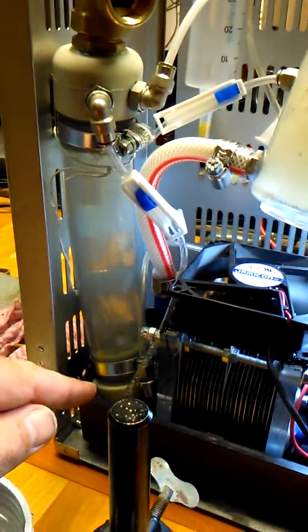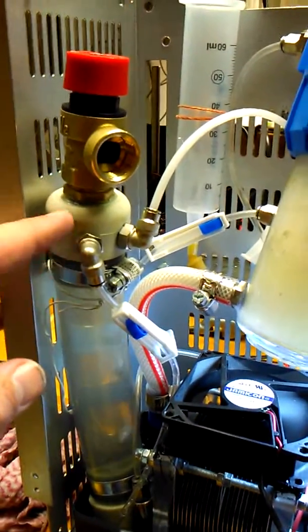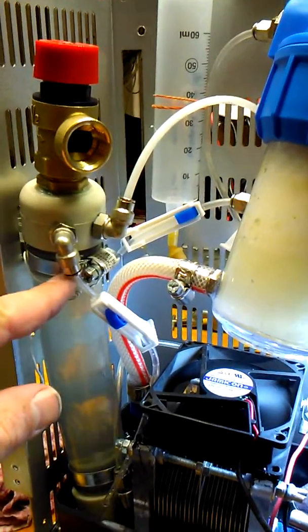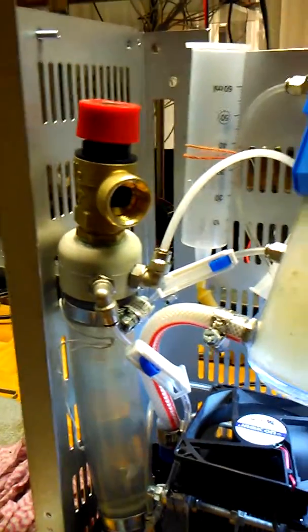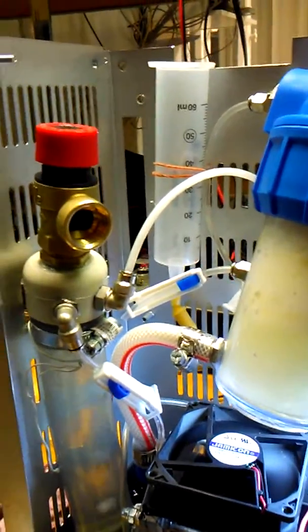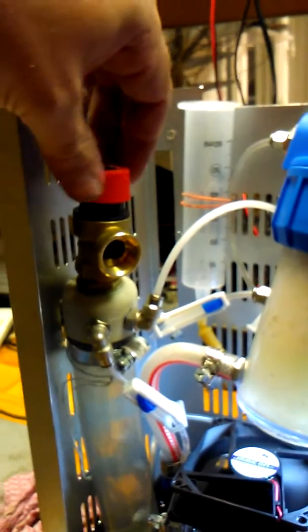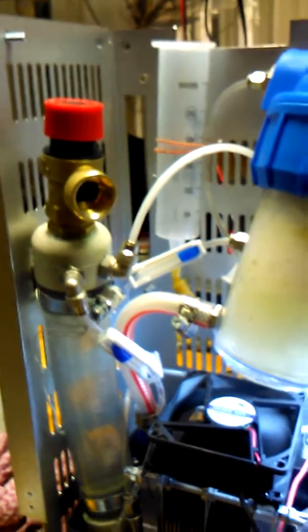Here is a homemade bubbler. One eighth inch piping fittings are used together with four millimeter pipes taken from medical syringes and blood transfusion systems. On the top we see a safety pressure release valve at 1.5 bar.